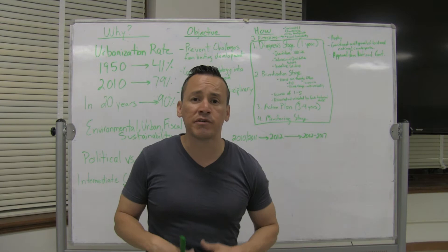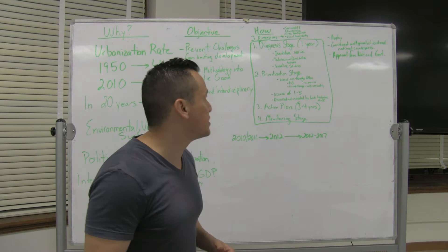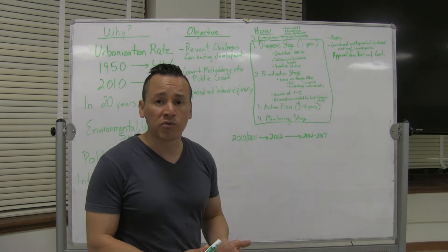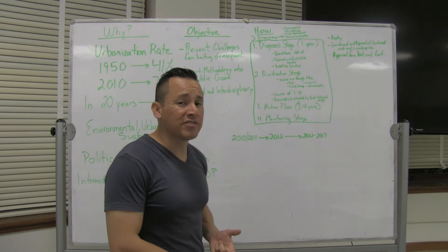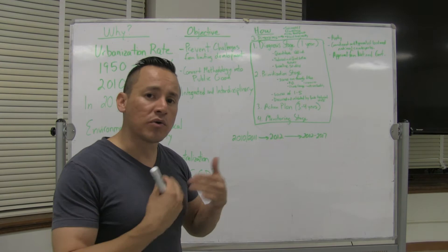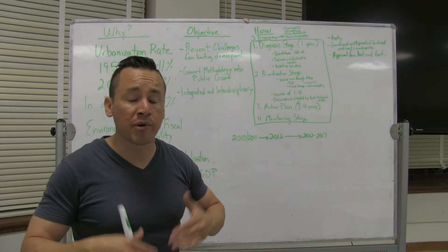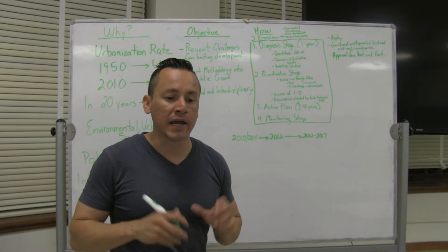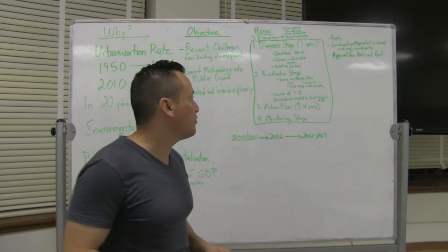So we begin with a diagnosis stage. The first stage of implementing the methodology is to basically collect data. And this is done by doing quantitative data collection with a total of 120 indicators. We look at technical and qualitative analysis and we look at baseline studies. This process takes one year and after that one year you have a baseline of the results that you're then going to take into the prioritization stage which allows you then to look at all of the data you've collected and be able to assess where the most urgent needs are.